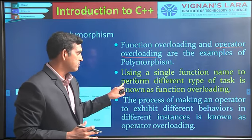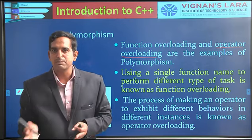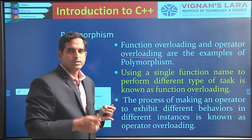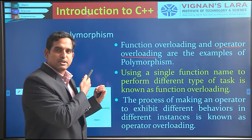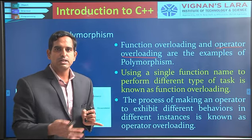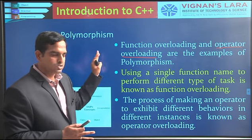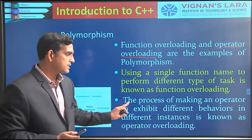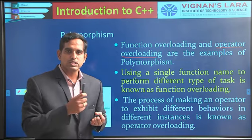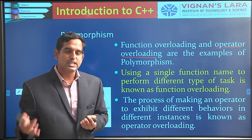Using a single function name to perform different types of tasks is known as function overloading. In the draw method example, you use the same method to draw a circle, a rectangle, and a square. In the square example, you use the same method to square an integer and to square a float. The process of making an operator exhibit different behaviors in different instances is called operator overloading — using one operator to perform multiple operations.